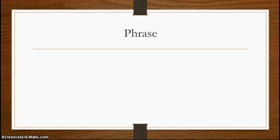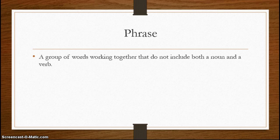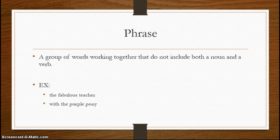The first thing to know is what a phrase is. A phrase is a group of words working together that do not include both a noun and a verb. They can have one or the other, but they can't have both. Some examples would be 'the fabulous teacher' or 'with the purple pony.'